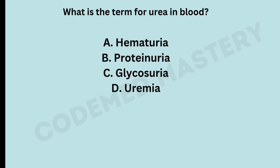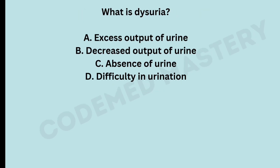What is the term for urea in blood? Option A: hematuria. Option B: proteinuria. Option C: glycosuria. Option D: uremia. The right answer is option D, uremia. Option A, hematuria, is the medical term for presence of blood in urine. Option C, glycosuria, is a condition where there is excess glucose, that is sugar, in the urine.